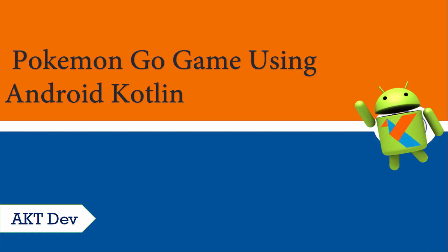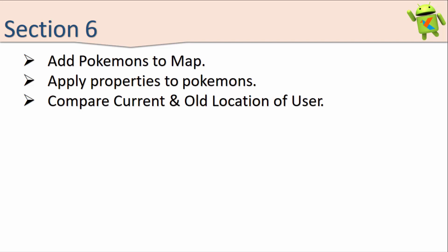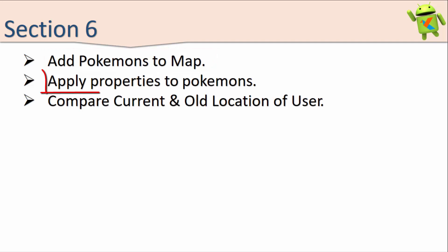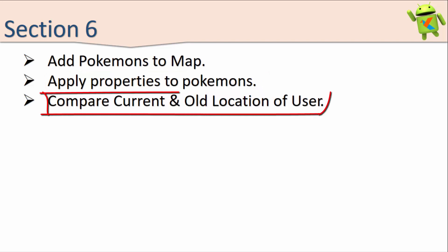Hey, hello everyone, welcome back to the course on a Pokémon Go game using Android. We are in the sixth section of our course. In this section we will learn how to add Pokémons to our map at multiple different locations, add properties such as name, description, current location latitude/longitude, and image. Each Pokémon will have a different image and be situated at a different location. We will also compare the current location and the old location of our user to verify movement via GPS. Let's start.